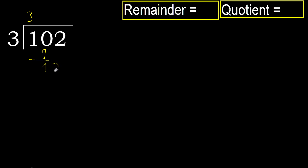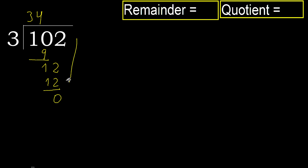Bring down 2, making 12. 3 multiplied by 5 is greater. 3 multiplied by 4 is 12, which is not greater. Subtract, remainder is 0. There is no next number, therefore finish.